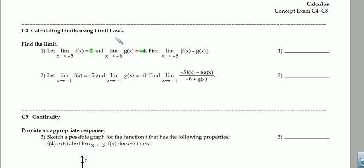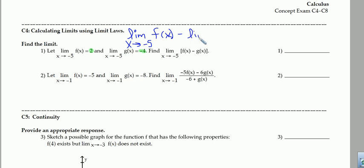What we need to understand here is that the limit of f of x minus g of x is exactly the same, according to the limit laws, as the limit as x approaches negative 5 of f of x minus the limit as x approaches negative 5 of g of x. Which in our case is just 2 minus negative 4, or 6.